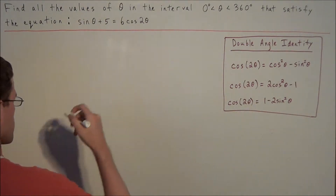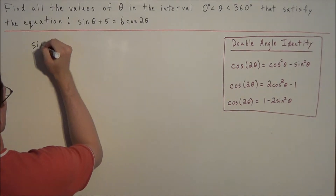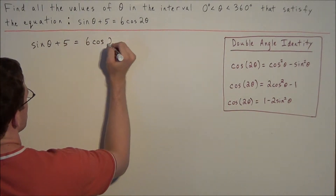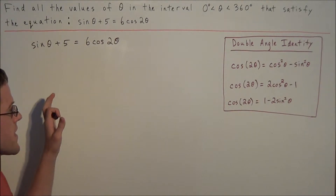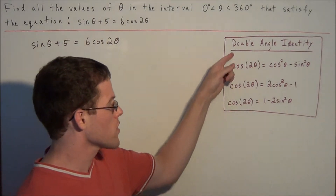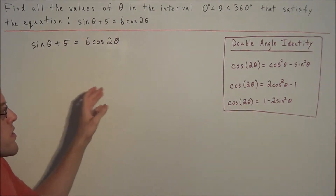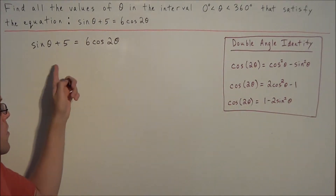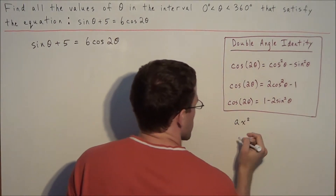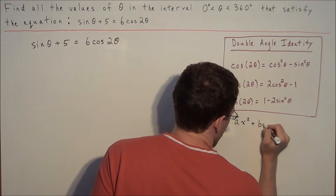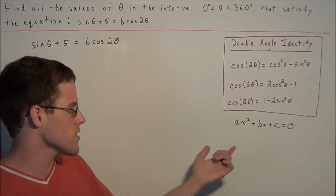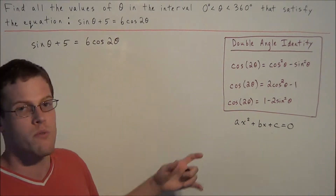When we look at this equation — sine theta plus 5 equals 6 times cosine of 2 theta — we need to break it down into many steps. We want to make a substitution for cosine of 2 theta using one of the double angle identities, but we need to know which one to choose. The goal is to set up a quadratic equation in the form ax squared plus bx plus c equals 0, where a, b, and c are constants and a is non-zero.